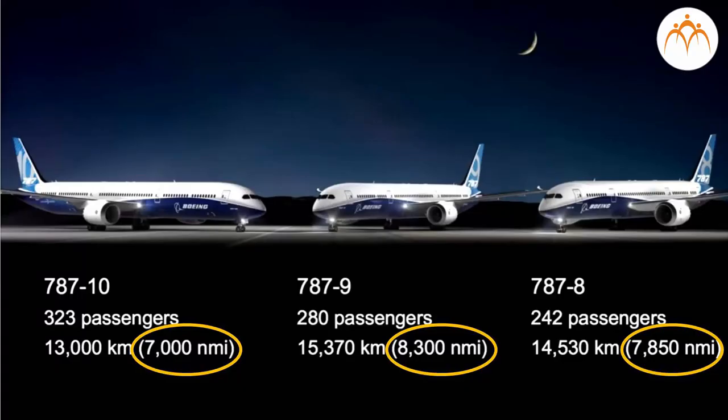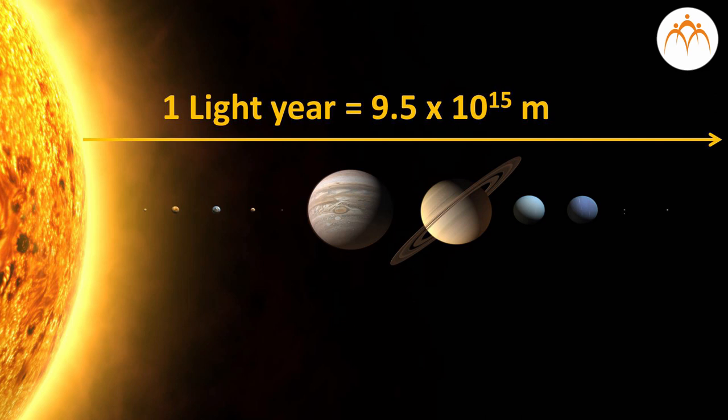Use of the nautical mile persists today in shipping and aviation. For really large distances, the light year is the unit of choice. A light year is the distance light would travel in a vacuum after one year. It is equal to 9.5 times 10 to the power 15 meters.